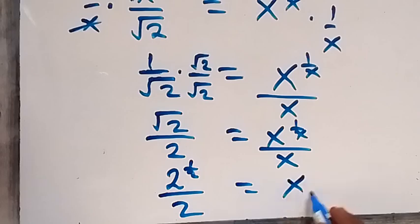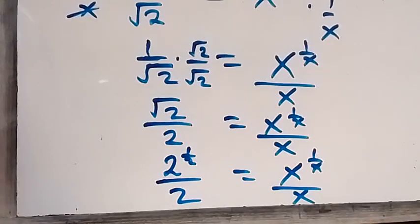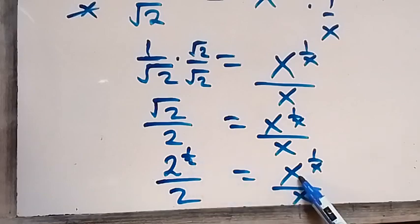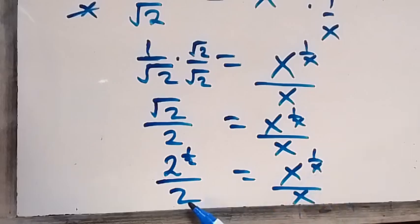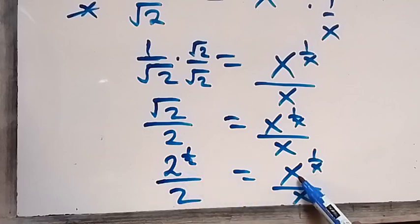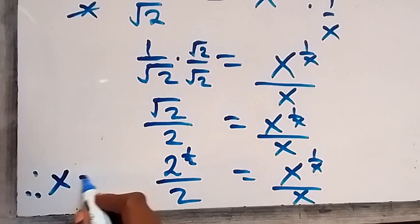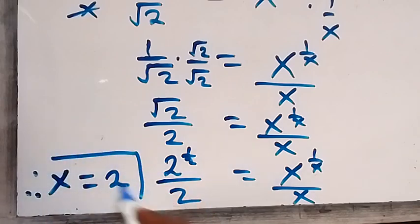This equals x raised to power 1 over x, all over x. Looking at this pattern, we have the same number appearing as the denominator of the inner fraction and the denominator of the whole fraction. By matching this pattern, we can therefore conclude that x equals 2.